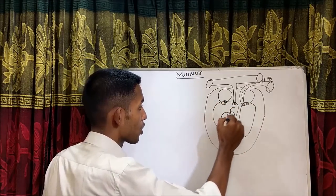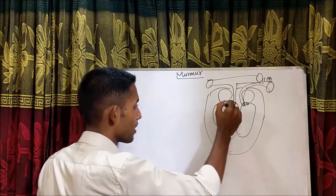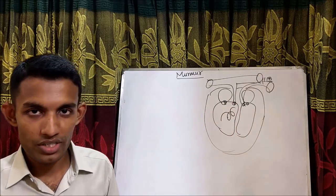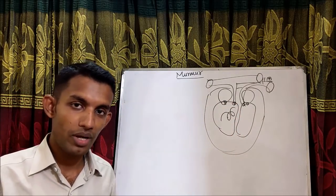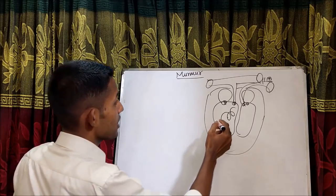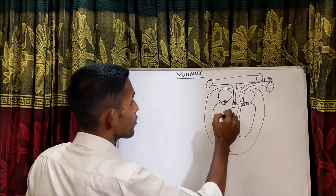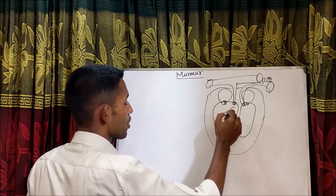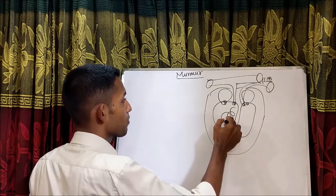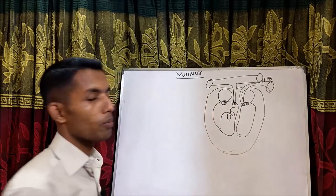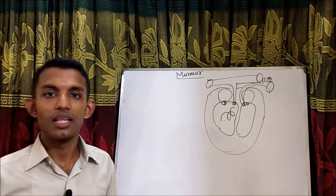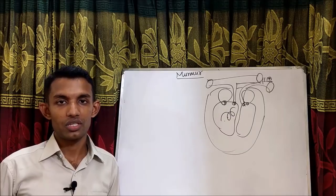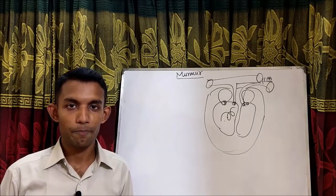If abnormal blood passes through a normal valve, then there is a turbulence — that is called murmur. In the same way, if a normal amount of blood passes through an abnormal valve, then there is turbulence — that is also murmur.